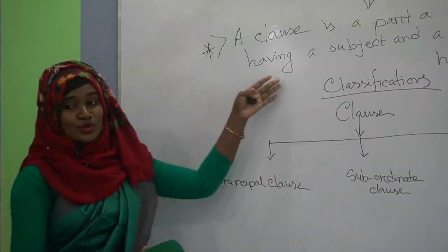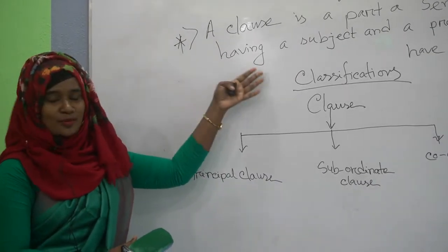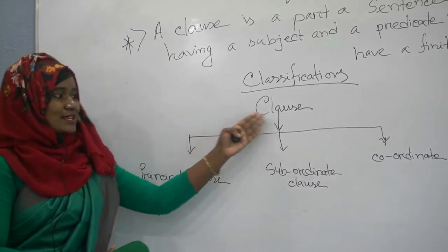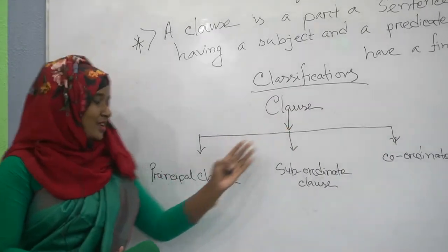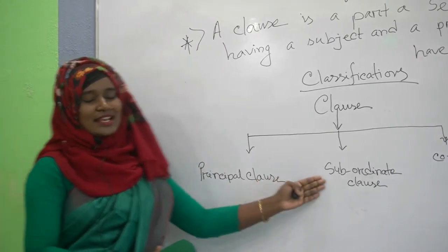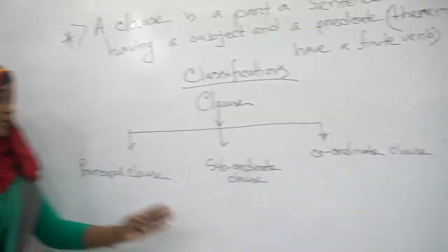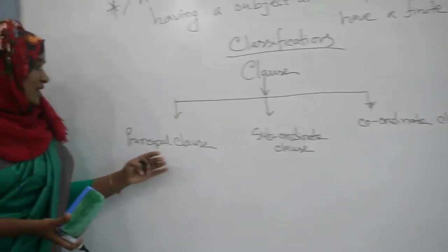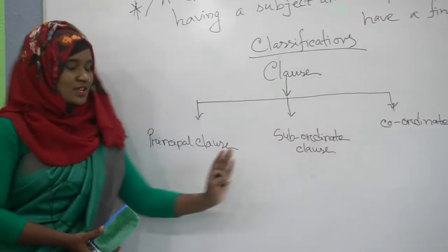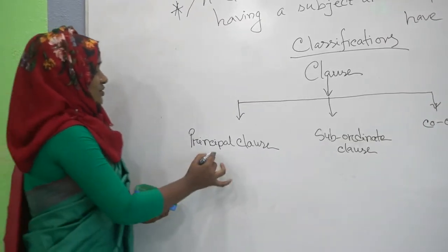Now we will learn what is Principal Clause, Subordinate Clause, and Coordinate Clause. Clauses are three types generally: the first is Principal Clauses, second is Subordinate Clauses, and the third is Coordinate Clauses. We will start with Principal Clauses.